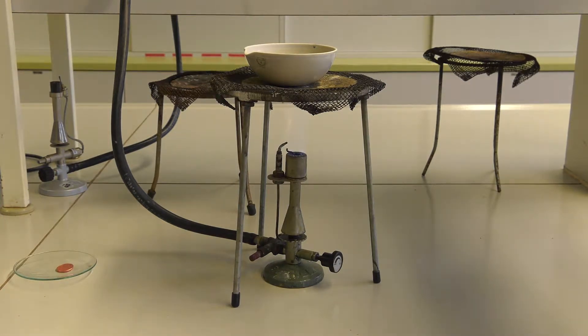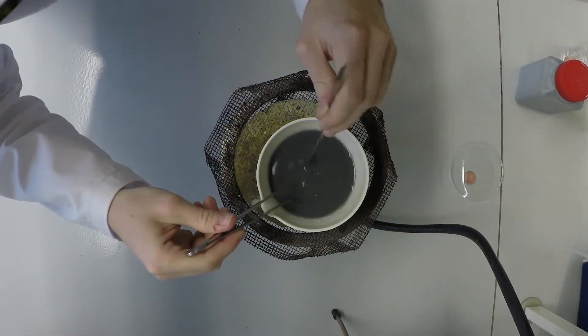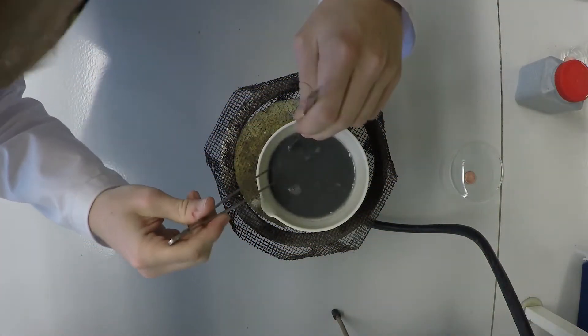Lift the bowl with the tongs off the wire net. Then, lift the coin out of the suspension using the tongs and rinse the coin under running water.